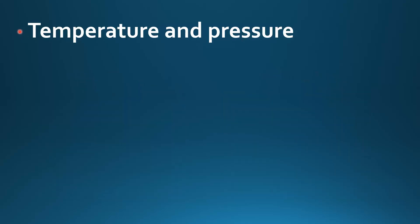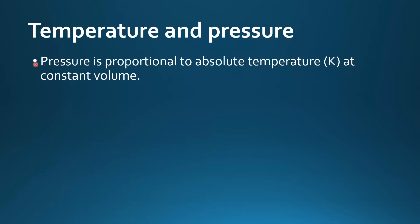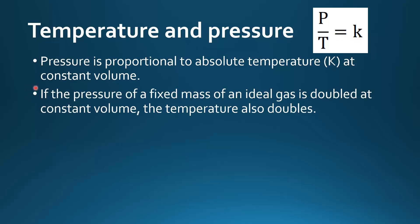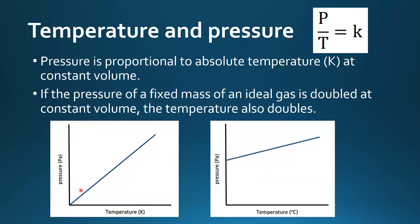Next we look at the relationship between temperature and pressure. Pressure is proportional to absolute temperature — that's the temperature in Kelvin — at constant volume. This can be represented by P over T equals K constant. So if the pressure of a fixed mass of an ideal gas is doubled at constant volume, the temperature also doubles. If pressure is plotted against temperature in Kelvin we have a linear graph, a straight line that passes through the origin.